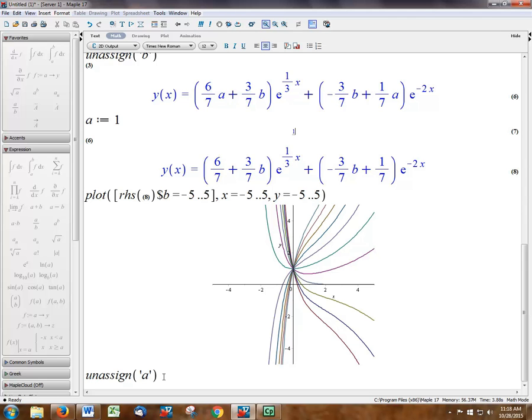And then the last command is I unassign A, so now I can get my function back. But that's how you make a plot. Thank you.